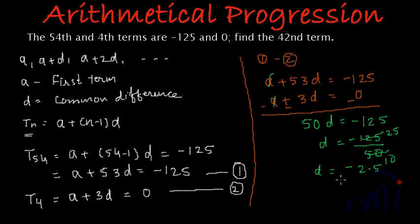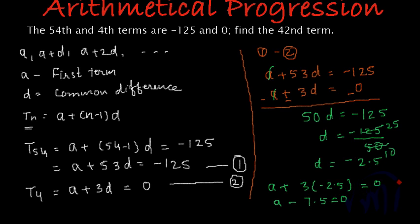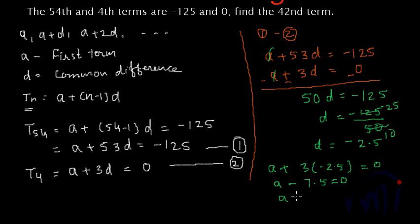So we have got d as -2.5 and if I put this value of d in equation number 2, we will get a plus 3 multiplied by -2.5 is equal to 0. That means a minus 7.5 is equal to 0. And from here we will get a is equal to 7.5.